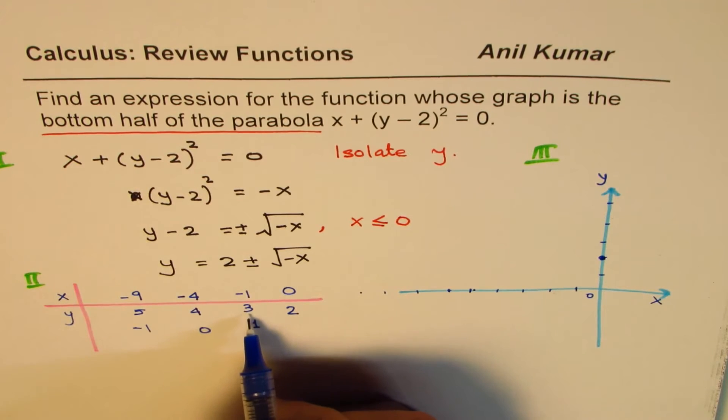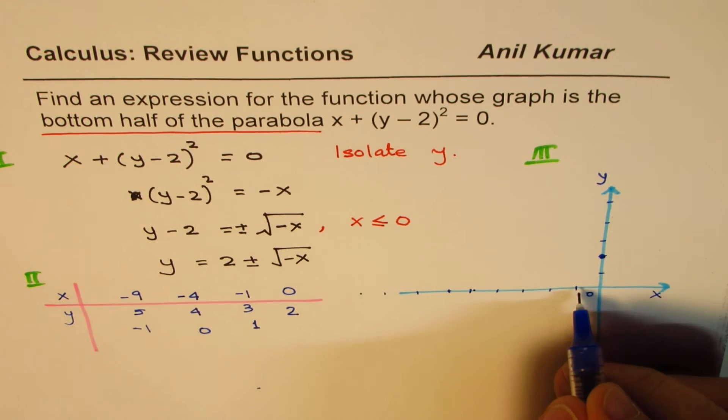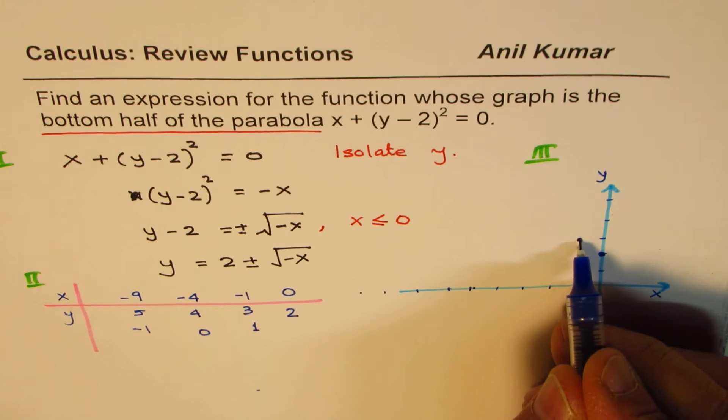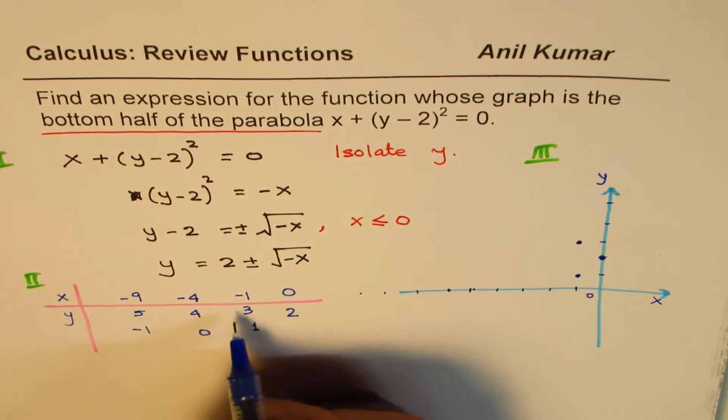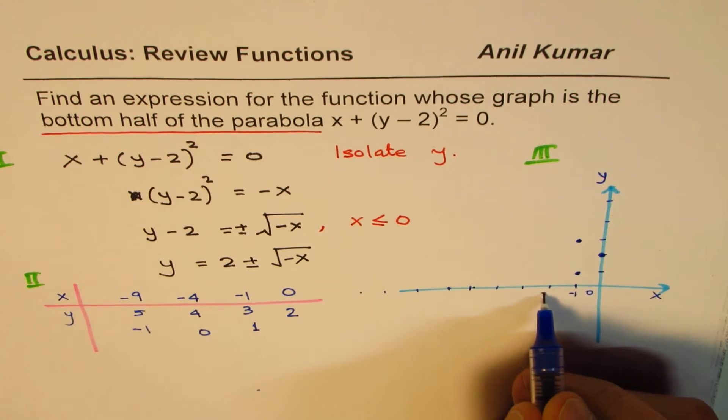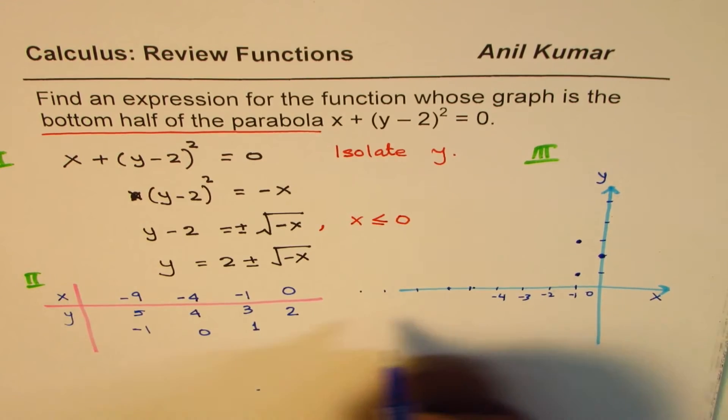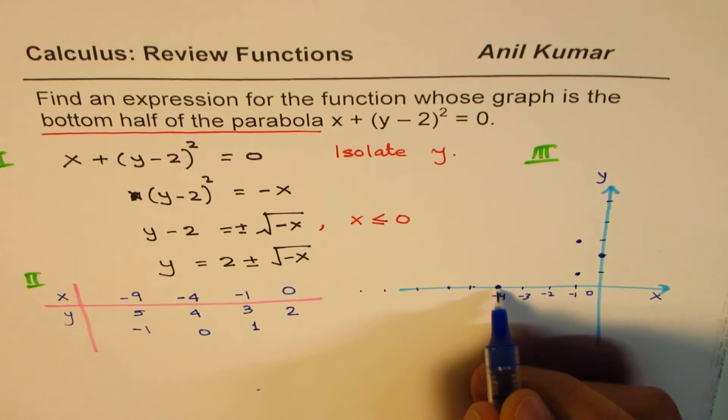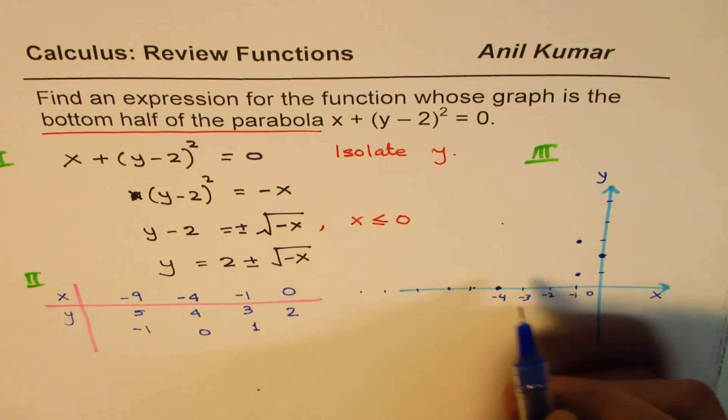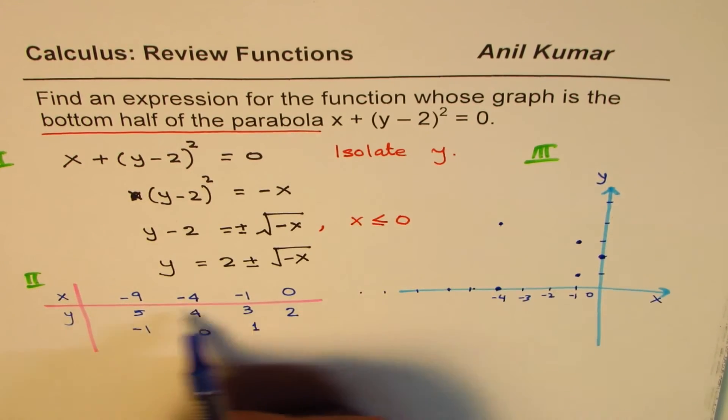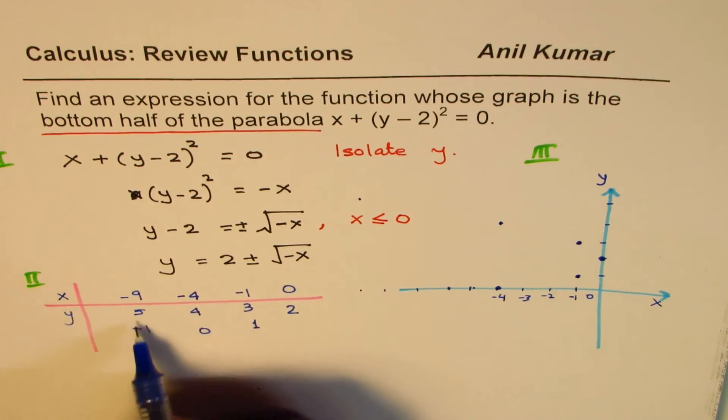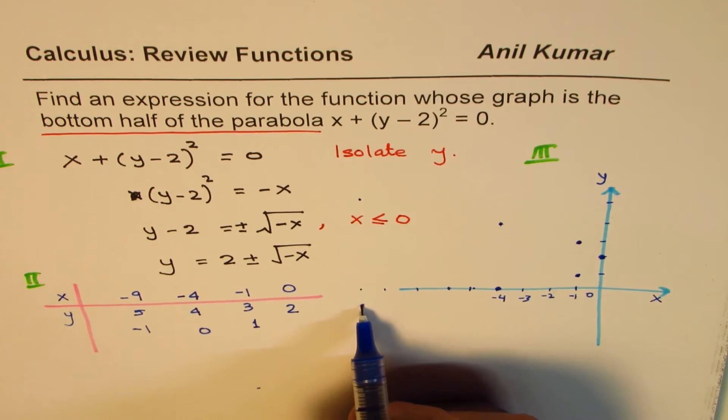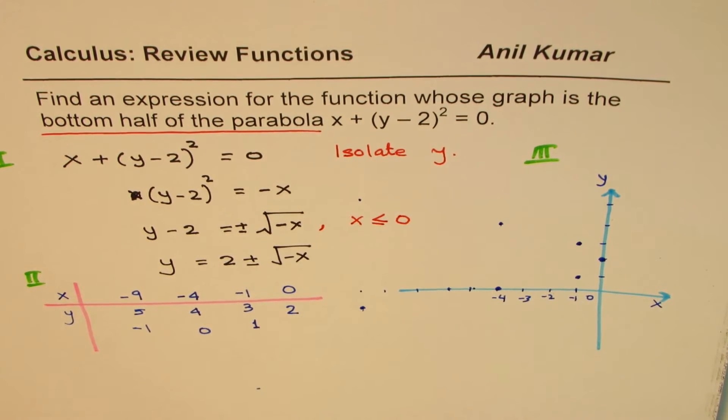At x = -1, we have 3 and 1, two values. Since we have two values, it is not a function. At x = -4, we have two values: one is 0, the other one is 4. At x = -9, we have 5 as a value, maybe here, and -1 is another value. So that gives you possible points on the graph.